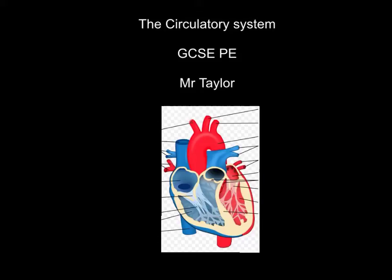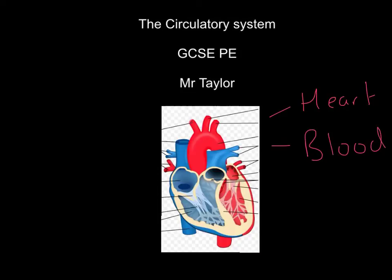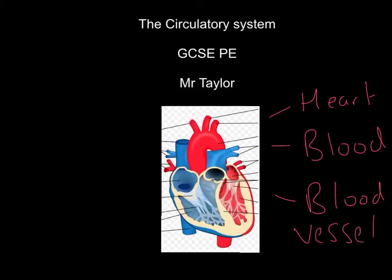Welcome to the circulatory system video. Essentially what we're looking at today are three parts of the circulatory system: the first part is the heart, the second part is the blood, and the third part is the blood vessels. When we're looking at the functions of the circulatory system, we're talking about three things.